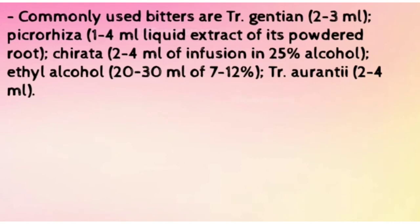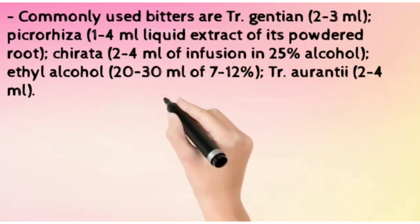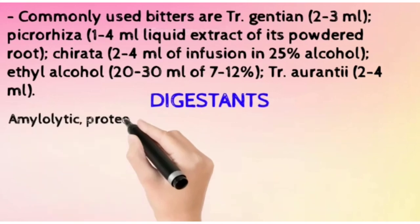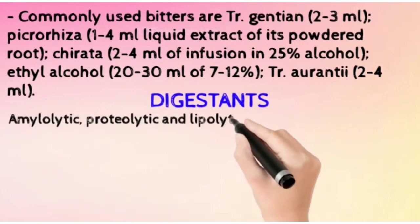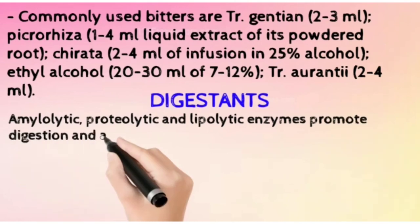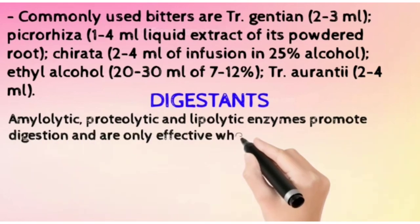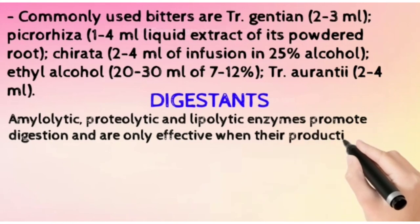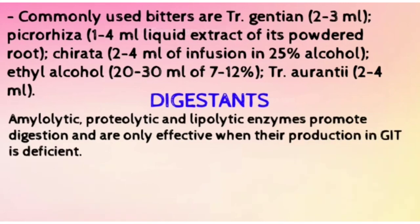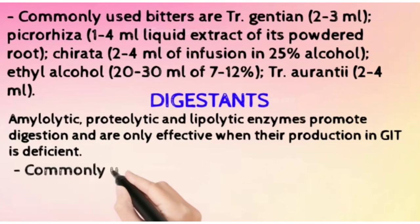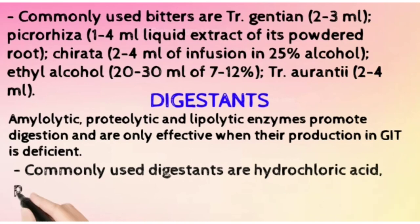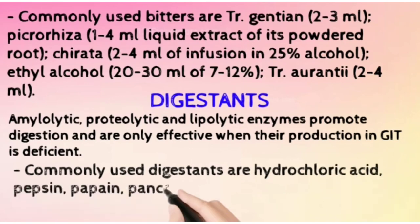Digestants include amylolytic, proteolytic, and lipolytic enzymes that promote digestion. They are only effective when their production in the GIT is deficient. Commonly used digestants include hydrochloric acid, pepsin, pancreatin, and diastase.